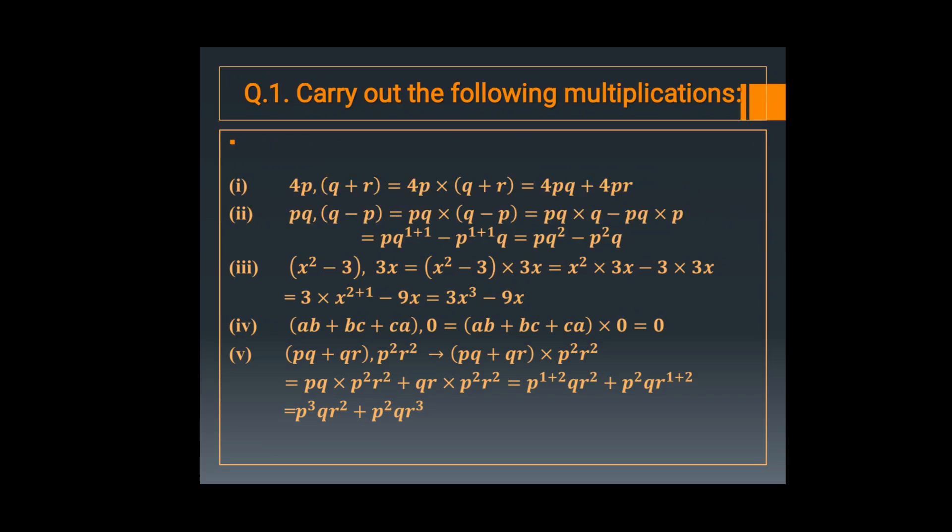Now in the third question, X square minus 3 multiplied by 3X. Here also 3X multiplied by X square, and then 3X multiplied by 3. So power of X is 2 plus 1 in the first term, and in the second only power is 1. So it is 3X cube minus 9X.